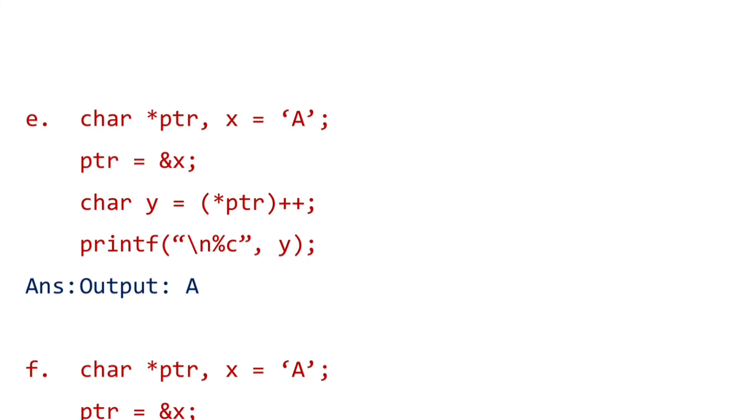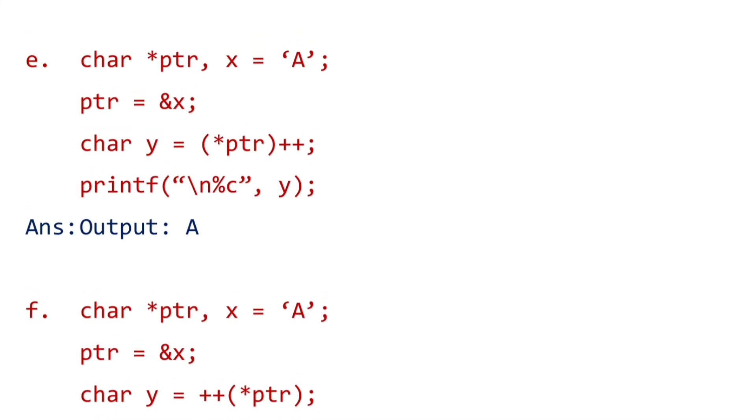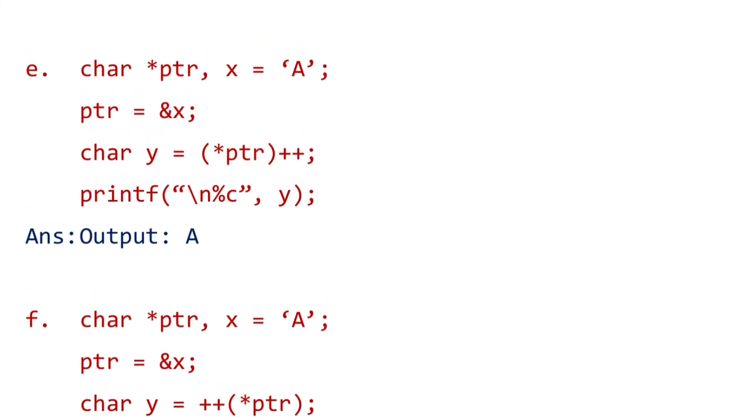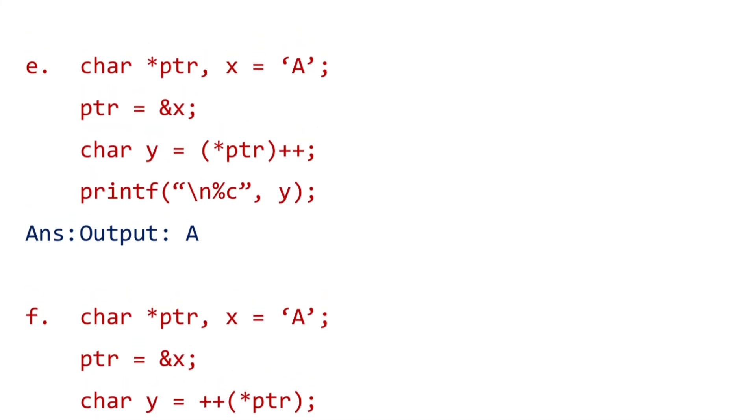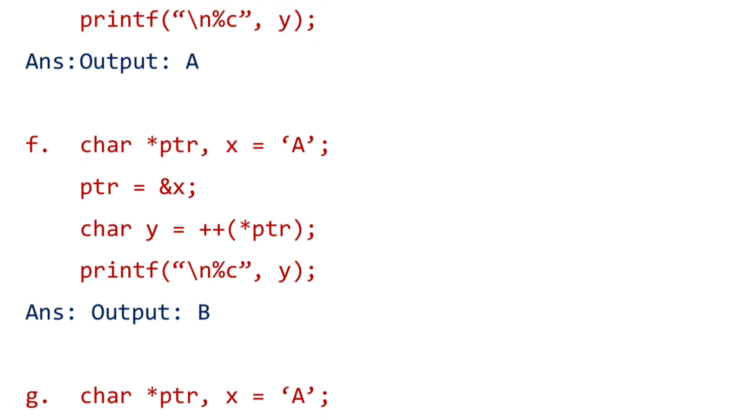Number e and f: Here the plus plus symbol is after, so we will get the value of A first. For number f, the plus plus is there before, which means A plus one, so finally we will get the output as B.